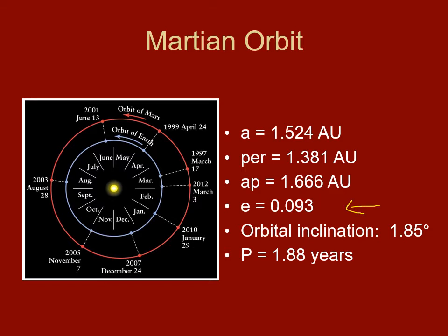Mars's orbit is much more elliptical than Earth's, with an eccentricity of 0.09. It ranges from as close as 1.38 AU to about 1.67 AU, averaging about 1.5 AU from the Sun. The orbital tilt is almost 2 degrees relative to the ecliptic, so it's very close to Earth's orbital plane, and the orbital period is about 1.88 years.